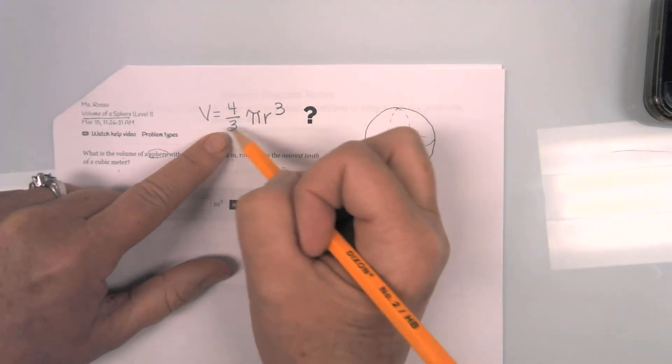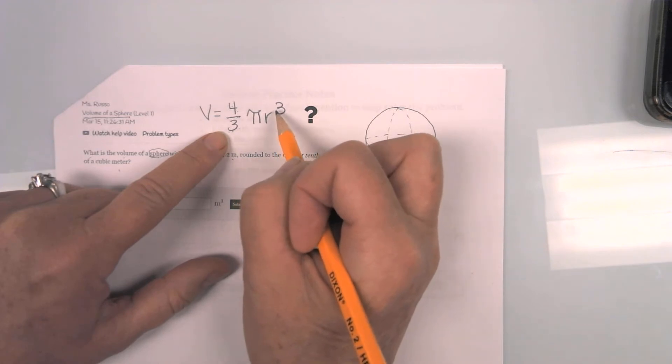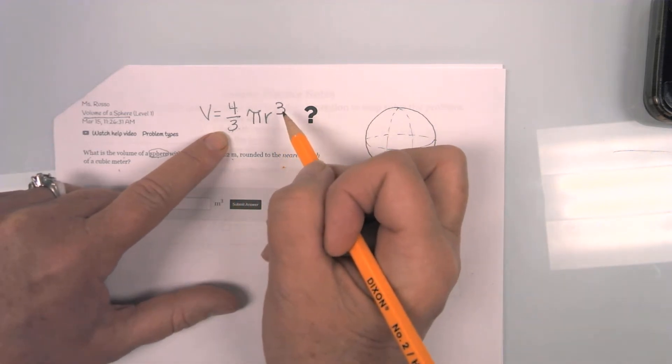And having this divided by three helps me to remember that I need a radius of three.